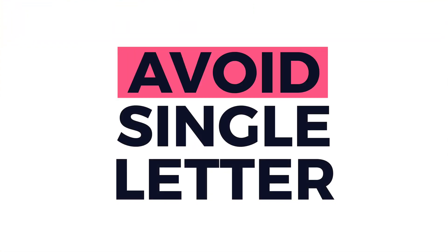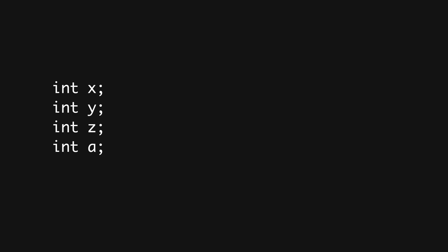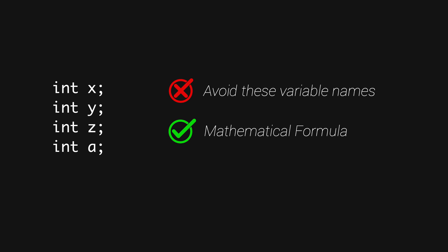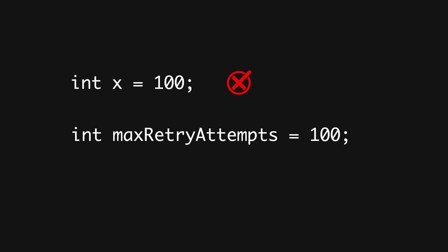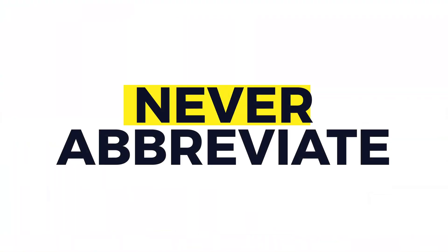Avoid single-letter variables. If you're using variable names like x, y, z, a, or l, you should be avoiding those. They're okay when working with mathematical formulas where such names are standard, but everywhere else you should give a concise, meaningful name. For example, if you want to identify retries, use a name like 'max_retries_allowed', which clearly describes what that variable is storing.